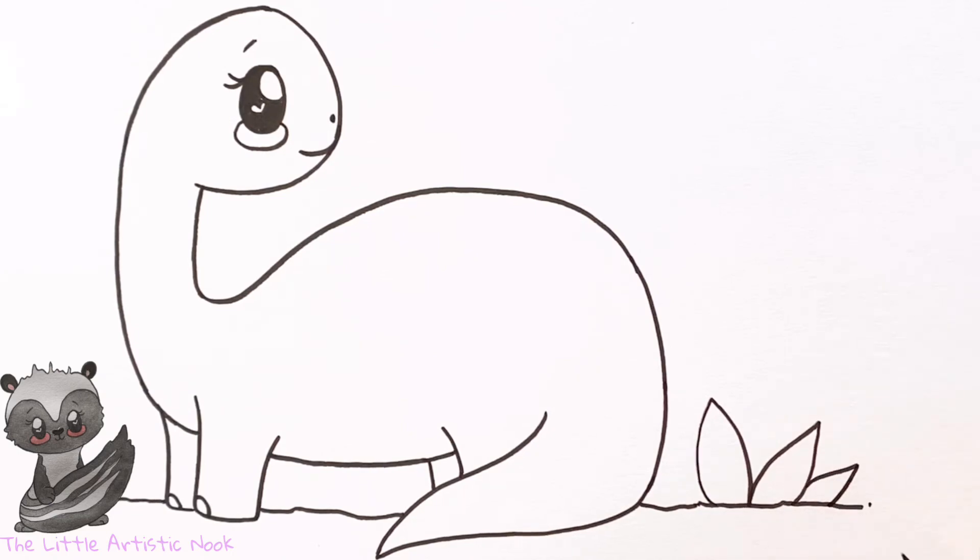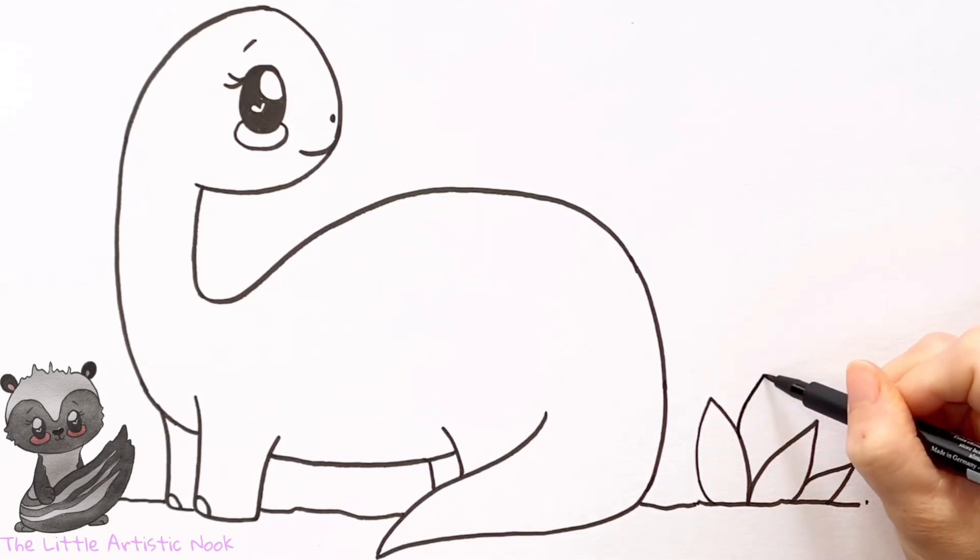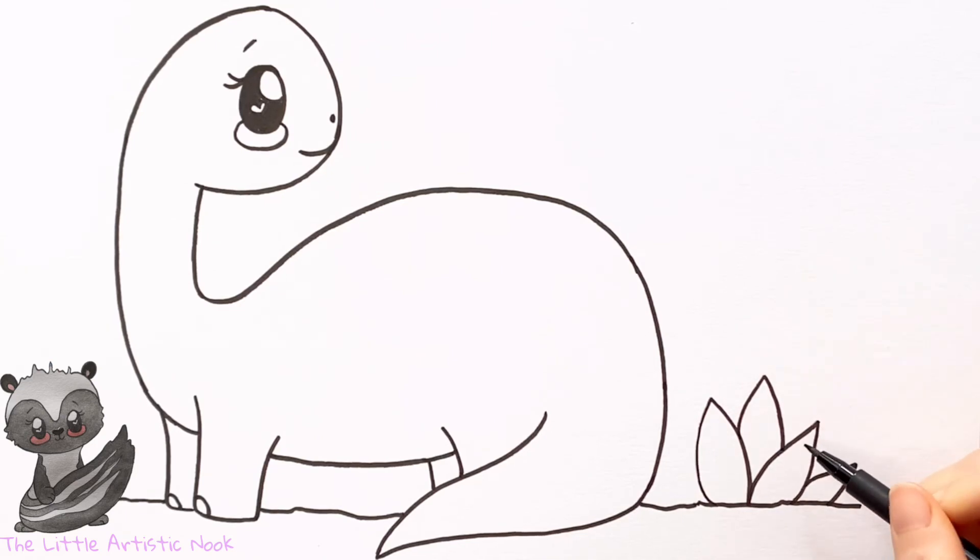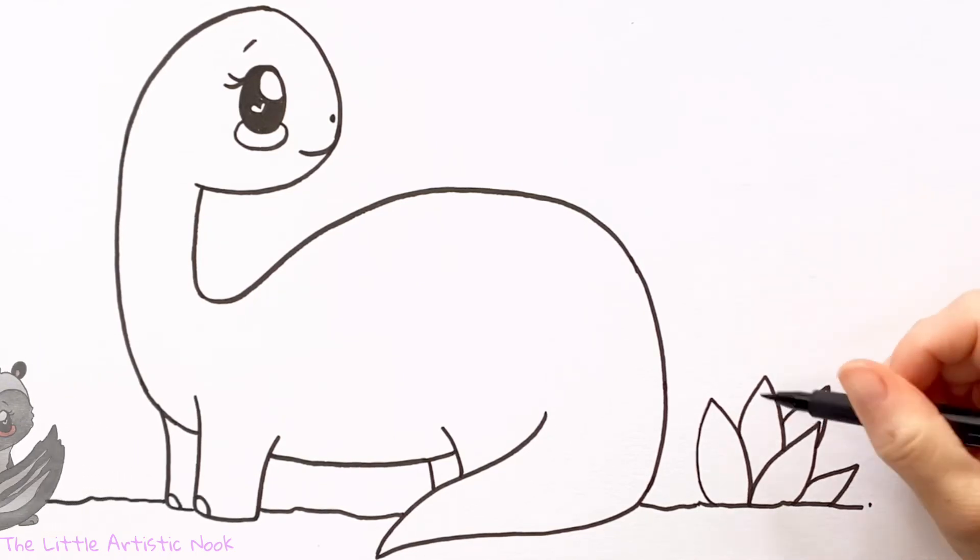Then once you have enough in the foreground, you can start to add these shapes in behind your first set of leaves. So to do that, it's just like drawing a whole bunch of upside-down V shapes that are just meeting up with the lines in front of it.